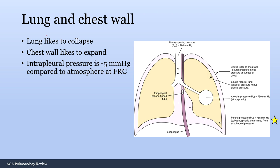The NBME likes to test that the lung naturally wants to collapse while the chest wall wants to expand. This creates a vacuum in the intrapleural space, making intrapleural pressure negative 5 mmHg compared to atmosphere. This negative intrapleural pressure is important because it pulls the alveoli outward, preventing them from collapsing.